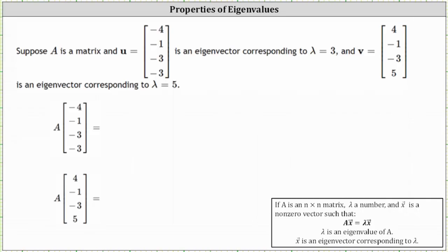Suppose A is a matrix and vector U is an eigenvector corresponding to the eigenvalue lambda equals three, and vector V is an eigenvector corresponding to the eigenvalue lambda equals five.